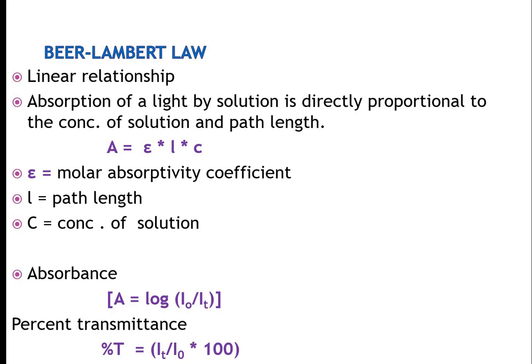It is a linear relationship. The absorbance of light through a solution is directly proportional to the concentration of the solution and the path length. Epsilon is the molar absorptivity coefficient. Absorbance equals log I0/It, and percentage transmittance equals It/I0 times 100. Transmittance is the inverse of absorbance.